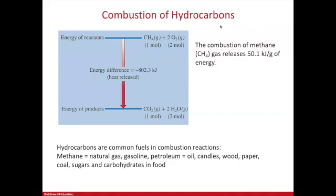We'll look at the different ways, starting with the fossil fuels that are used to generate electricity for the grid. Methane, or burning natural gas, is one of them. It releases a lot of energy in the form of heat, and the products for hydrocarbons are always carbon dioxide, CO2, and water, H2O.